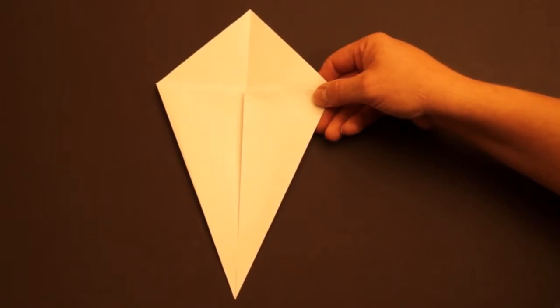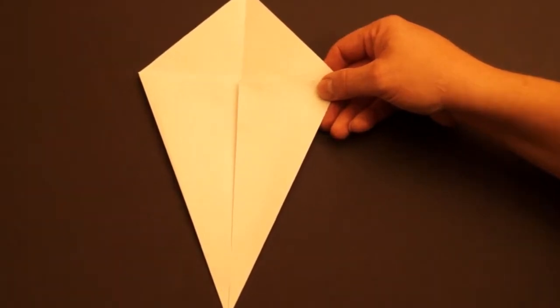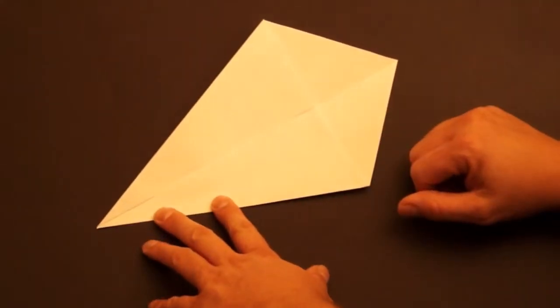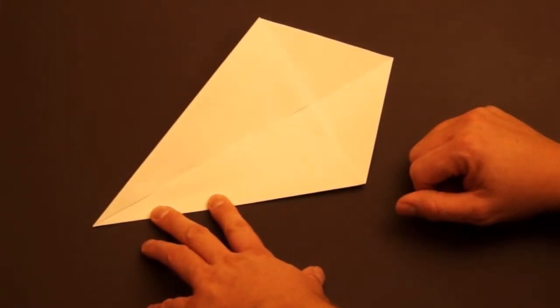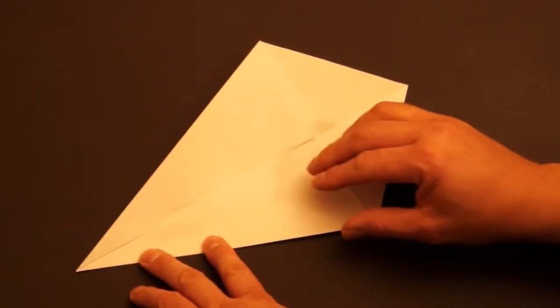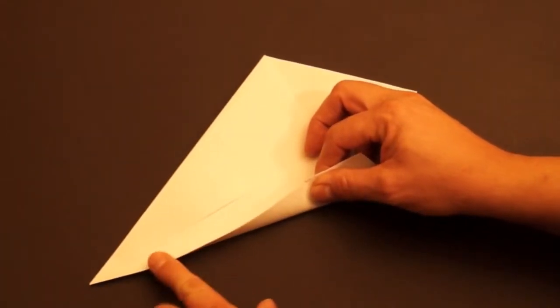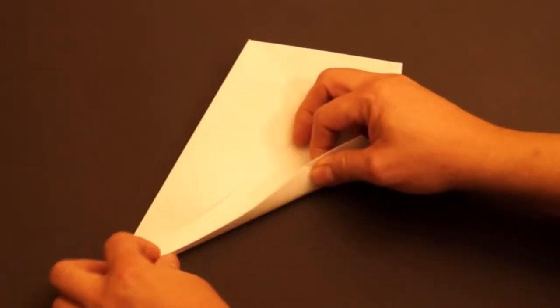First we start with the kite base. Then turn it sideways, like this. Fold this edge right here, not all the way to the center, but almost.